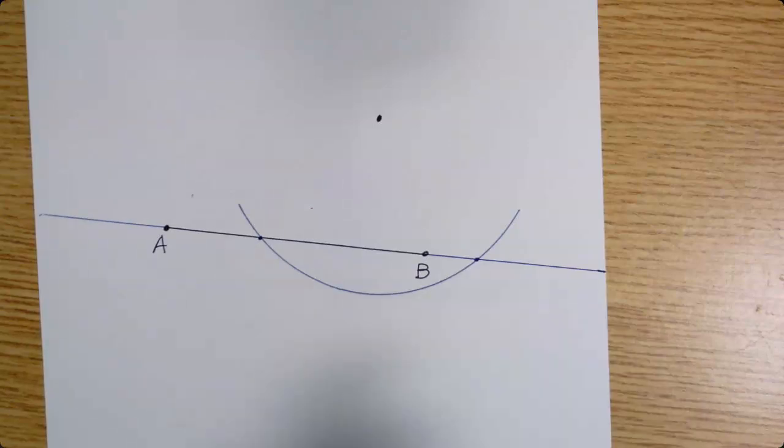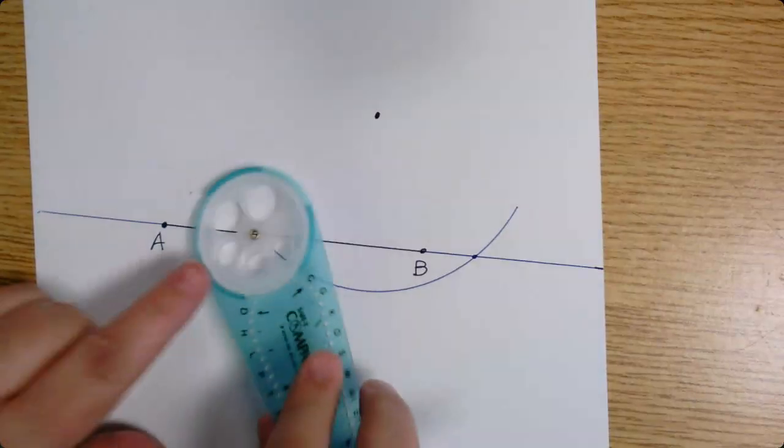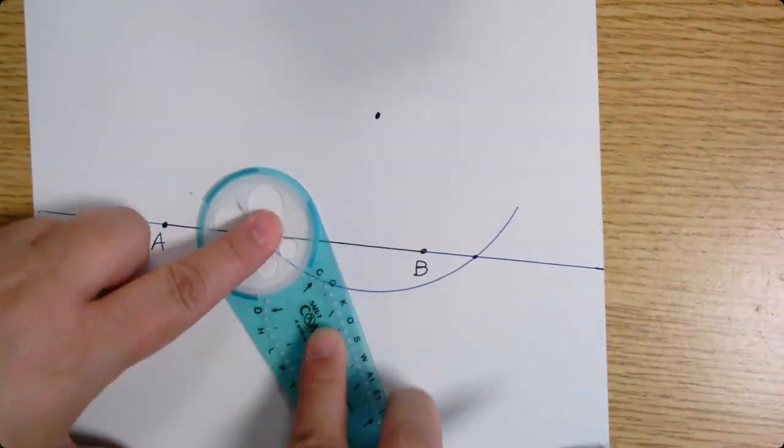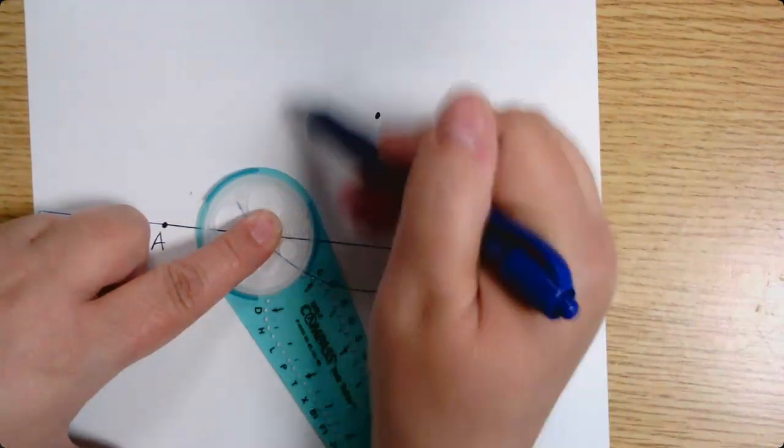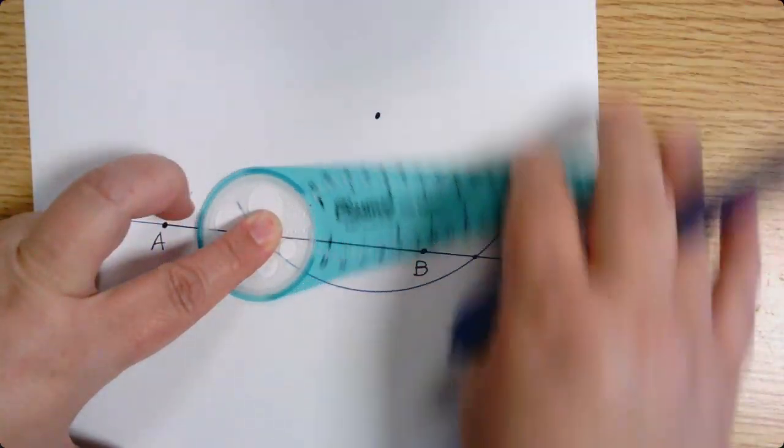All right, now that I have that, I'm going to draw two more arcs, one from here and one from here. So I'm putting the center over one of those points of intersection, and I could draw the arcs down here below my line or up here above my line. It really does not matter where. I think I'll do it below.